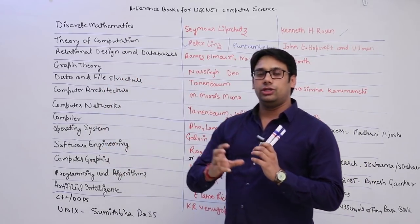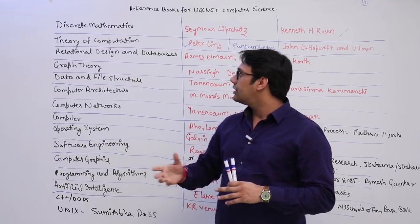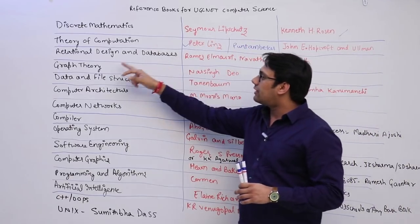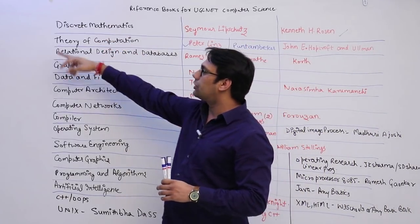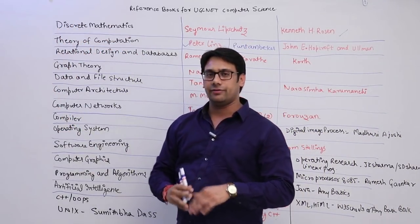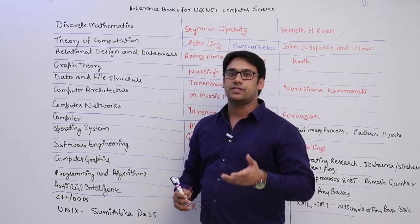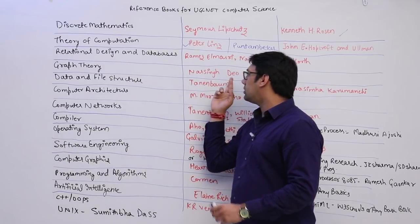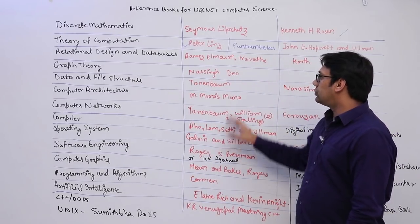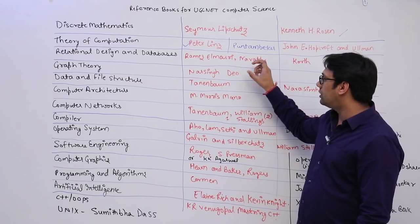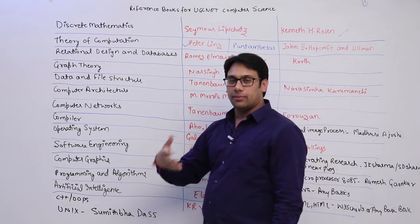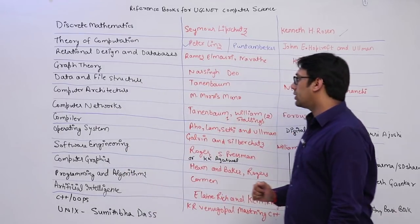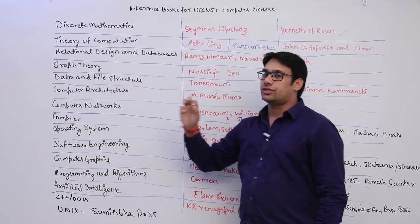For Graph Theory, it is optional to refer a separate book because if you buy Kenneth H. Rosen for Discrete Mathematics, graph theory is already included. But if you want a book specifically for graph theory, you can refer Narsingh Deo — a very good, older book that is still up to date. For Data Structures and File Structures, two books you can refer are Tenenbaum and Narasimha Karumanchi.